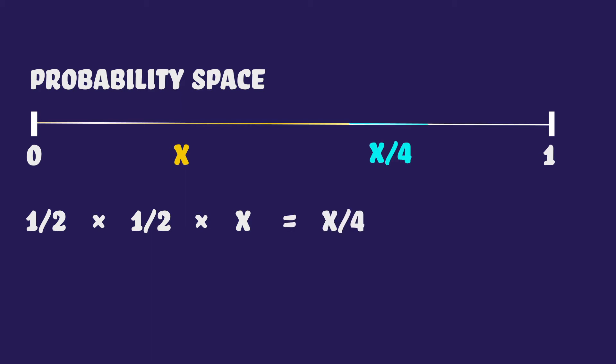You can do a similar argument to what we just did to figure out the probability that the highest common factor is 3 is x divided by 9, and the probability of the highest common factor being 4 is x divided by 16, and the probability of the highest common factor being 5 is x divided by 25, and so on.